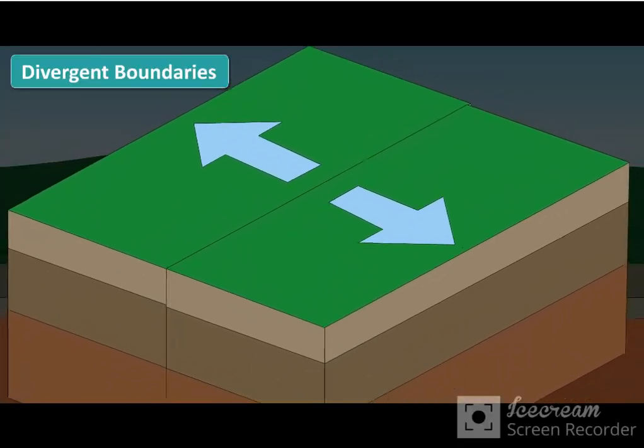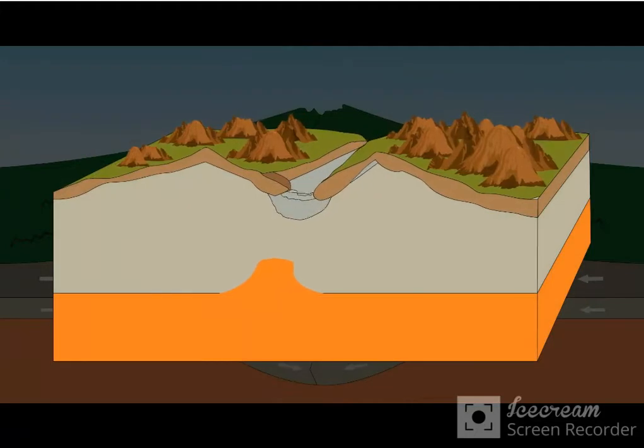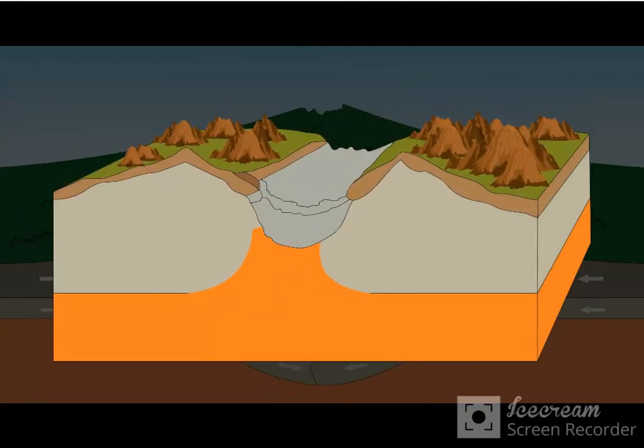Divergent boundaries are found where plates move away from each other. As the plates pull apart, magma pushes up from the mantle, cools and solidifies to form new crust. This zone is marked by rifting, the formation of surface cracks and volcanic activity.